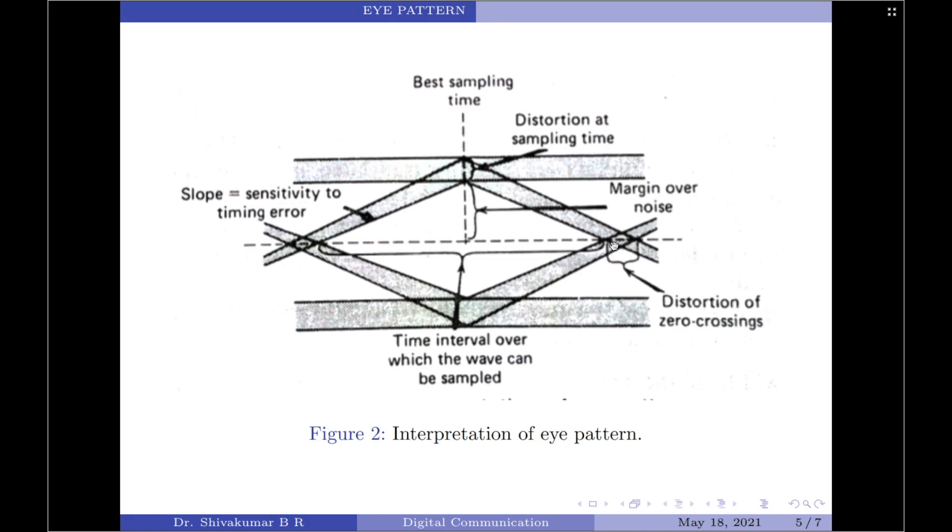You should note when the effect of intersymbol interference is severe, traces from the upper portion of the eye pattern will cross the traces from the lower portion of the eye pattern with the result that the eye is completely closed. In such a situation, it should be noted that it is almost impossible to avoid errors due to the combined presence of both intersymbol interference as well as noise in the system.